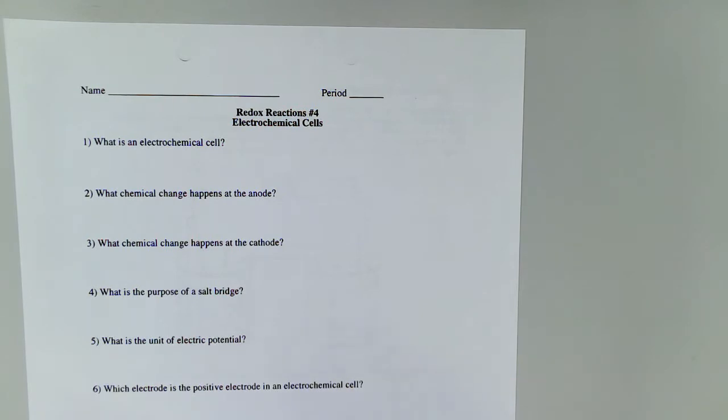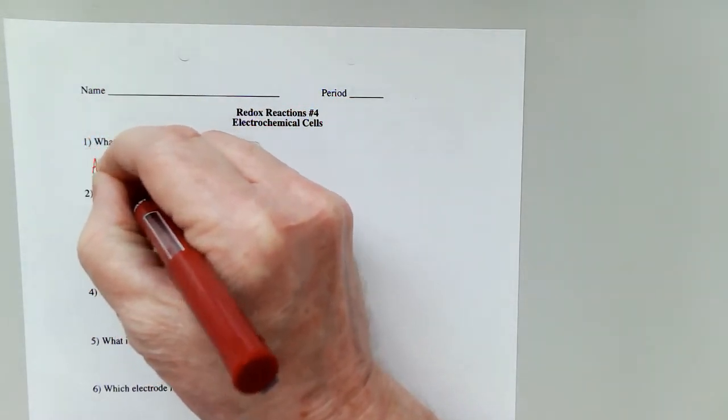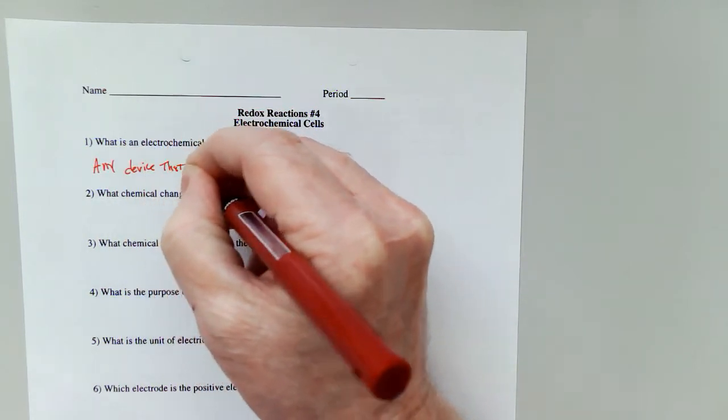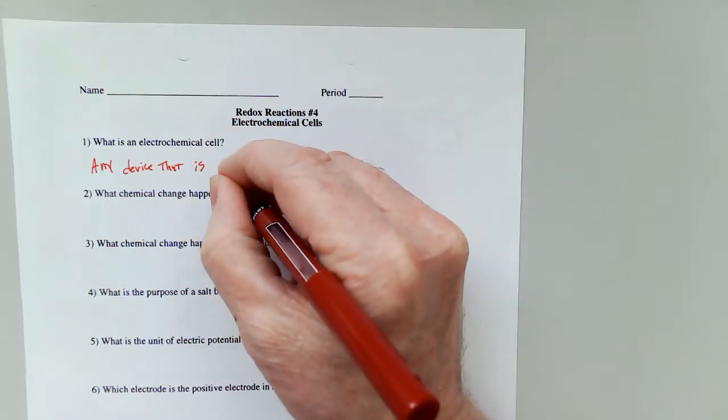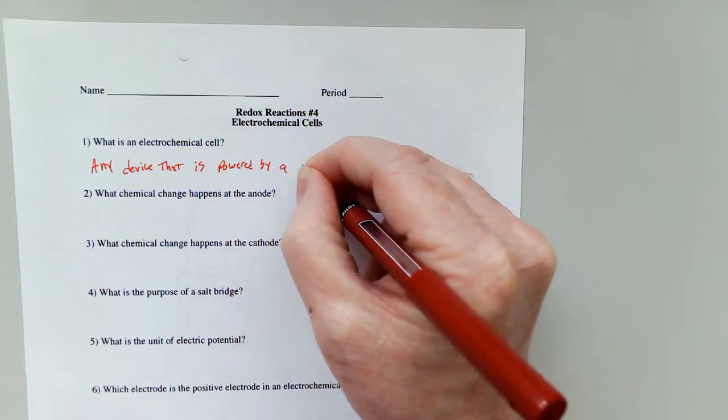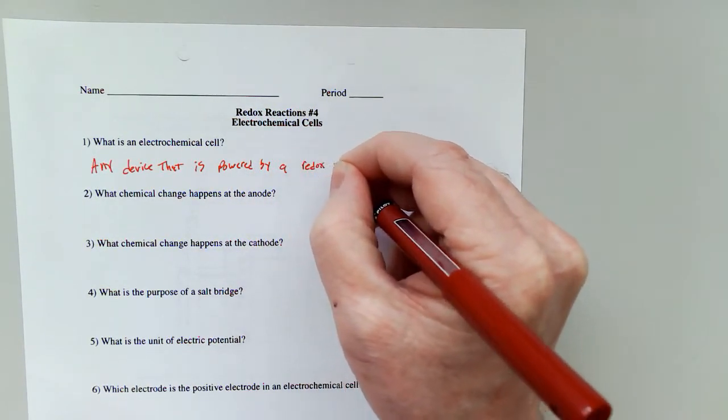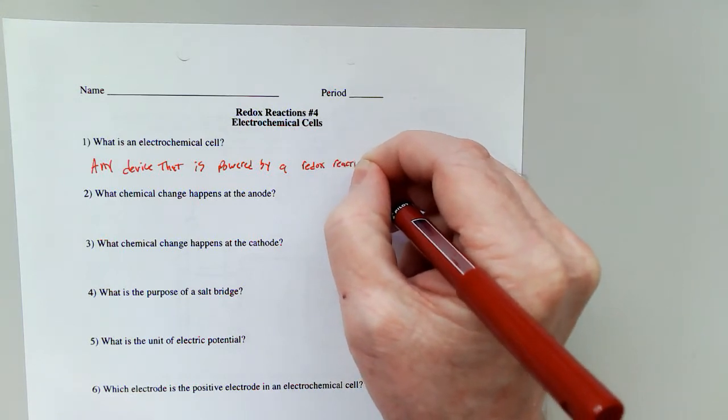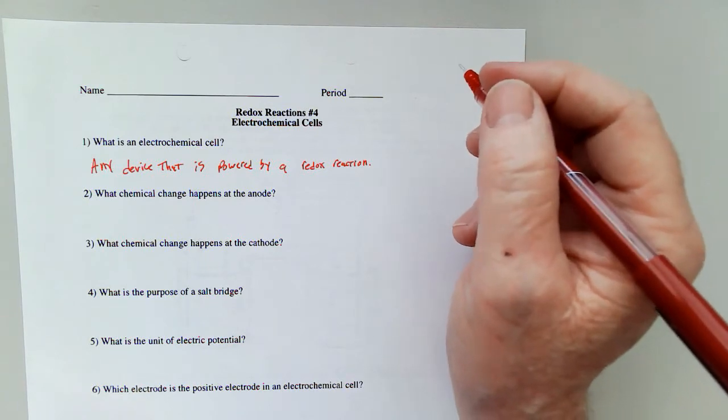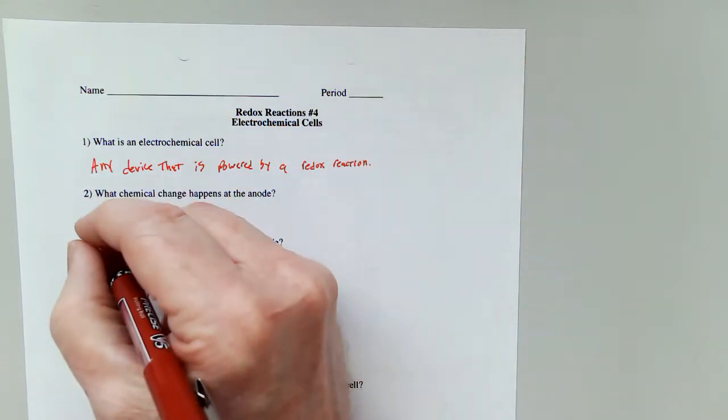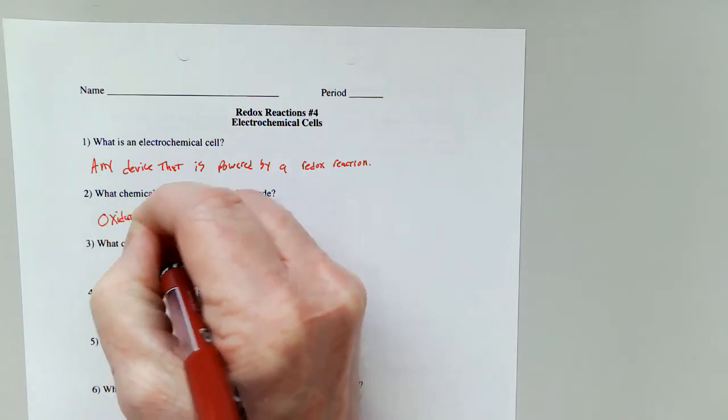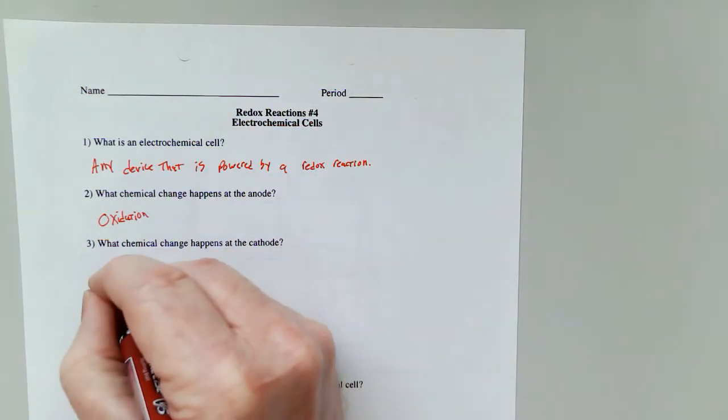What is an electrochemical cell? Well, it's any device that is powered by a redox reaction. So it has to have both an oxidation and a reduction. And the change that happens at the anode is the oxidation. And the change that happens at the cathode is the reduction.